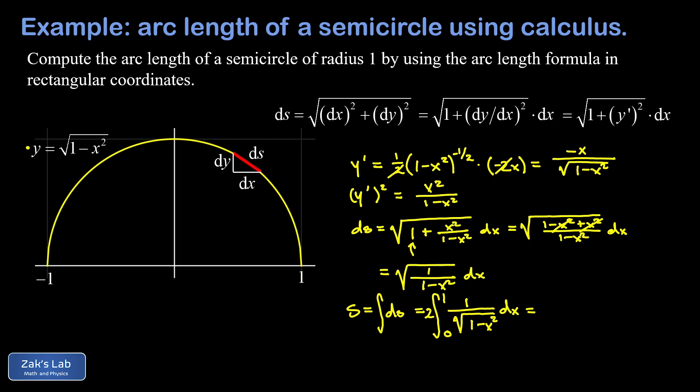Now at this point, we have to recognize a common formula for an integral that gives us the inverse sine function. And I'll post a link up at the top to the derivation of this formula, if you've never seen that before. This thing in our integral is precisely the derivative of the inverse sine. So I end up with two inverse sine of x evaluated from zero to one.